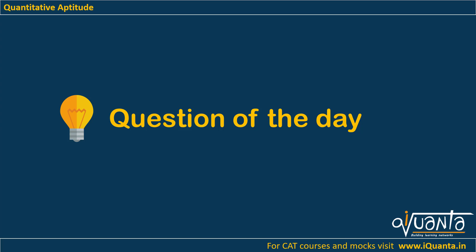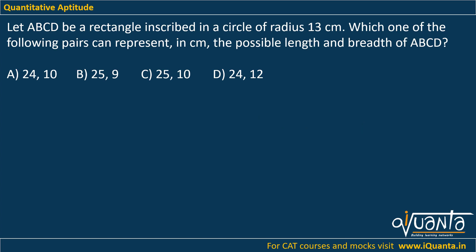Hello everyone, today we have a geometry question and again it is a CAT question. We will be looking into the Pythagoras theorem and a few properties of a circle. The question is: let ABCD be a rectangle inscribed in a circle of radius 13 cm, which one of the following pairs can represent in centimeters the possible length and breadth of ABCD.